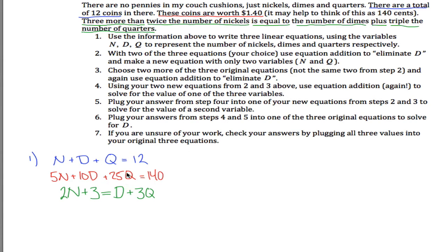So from this information up top, we get all this information, and I suppose you could leave it just like that, but since I know that later on I'm going to want to eliminate variables, I'm going to rewrite these, nickels plus dimes plus quarters equals 12, I'll leave that one alone.